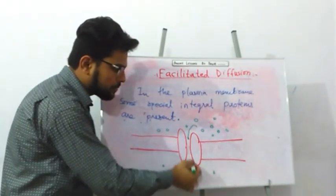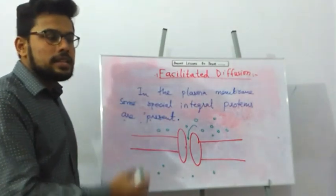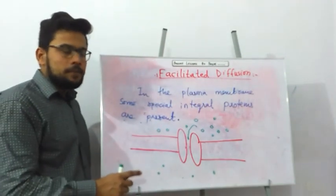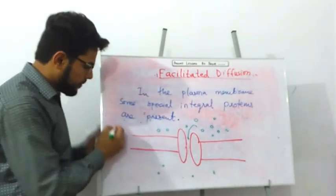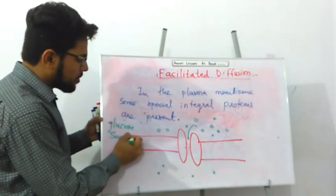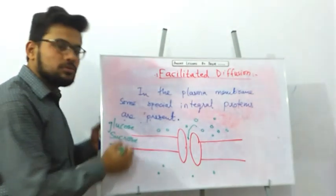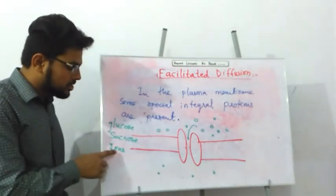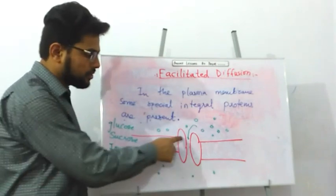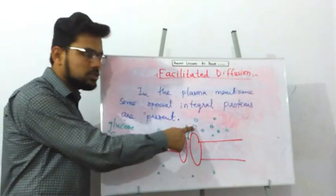The glucose molecule passes through this integral protein, which helps it cross the plasma membrane. Glucose, sucrose, and some ions are passed through facilitated diffusion. Ions require special integral proteins because they are charged and the plasma membrane does not allow them to pass directly. Movement takes place from a region of high concentration to a region of low concentration.